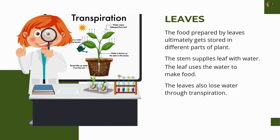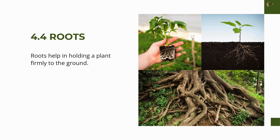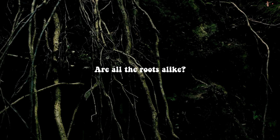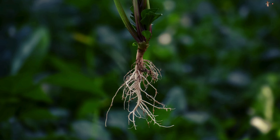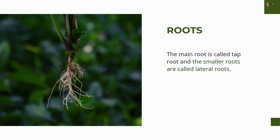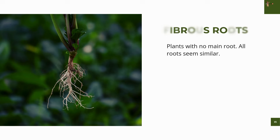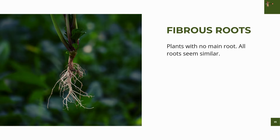We have seen that the stem supplies leaves with water, and the leaves use the water to make food. The leaves also lose water through transpiration. That is where the roots come in. Roots help in holding a plant firmly to the ground — they anchor the plant to the soil. There are two types of roots. The main root is called the tap root, and the smaller roots are called lateral roots. Plants that do not have a main root have all roots that look similar — these are called fibrous roots. Interestingly, the type of leaf venation and type of roots in a plant are related. Try to match the type of leaf venation and the type of roots for some plants and see.